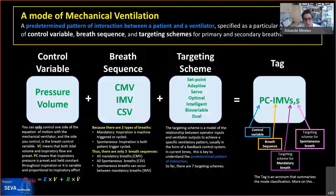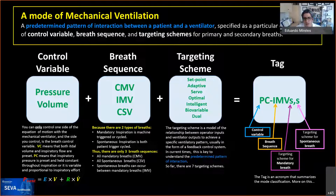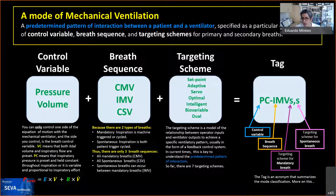Then there's the targeting scheme — a key term from Rob — referring to the ways we control the ventilator via computer software. At this point there are seven ways to control the ventilator, though there can be more. This is the initial classification we have. We'll talk about these different targeting schemes, which takes us to the TAG.